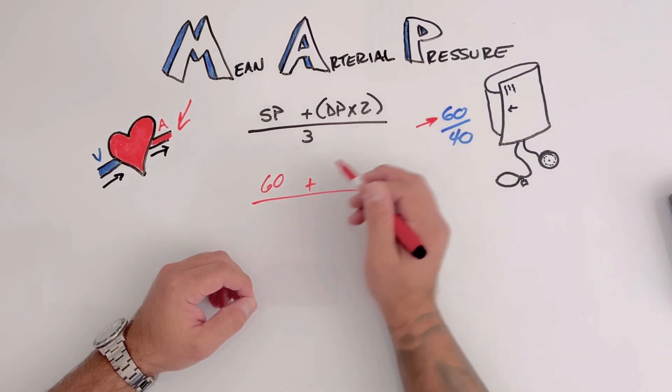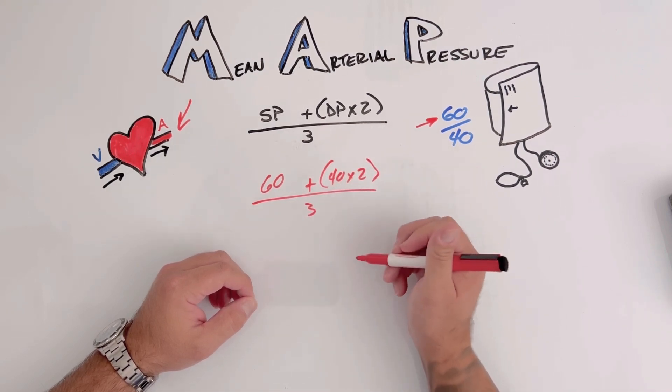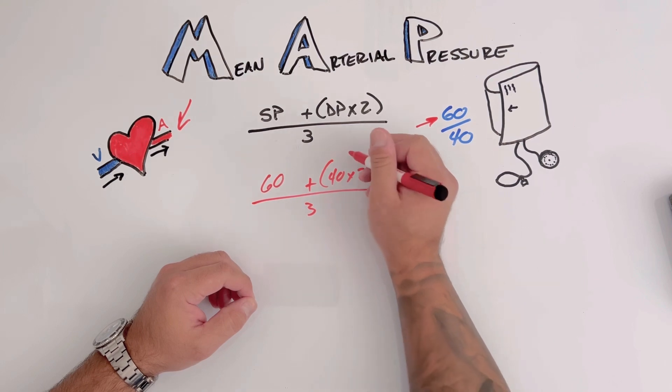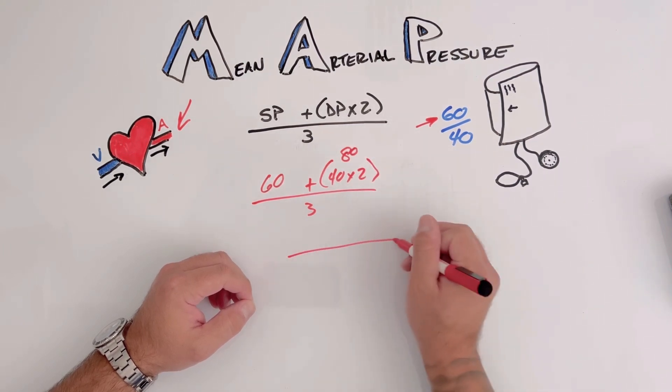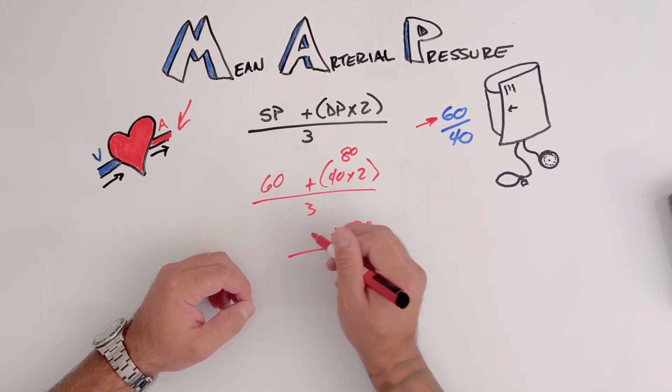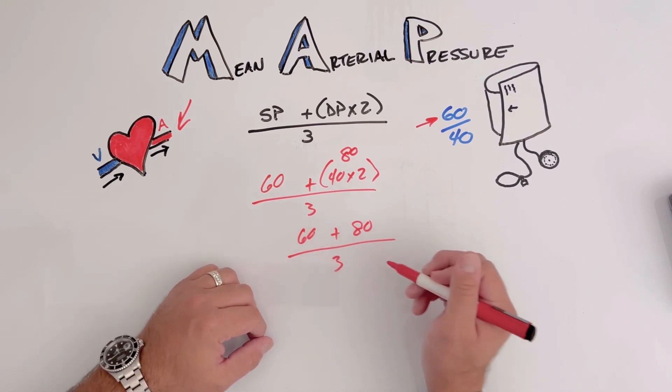Our systolic is 60. Our diastolic is going to be 40 times two divided by three. So 40 times two we know is 80. So we have 80 plus 60 over three.